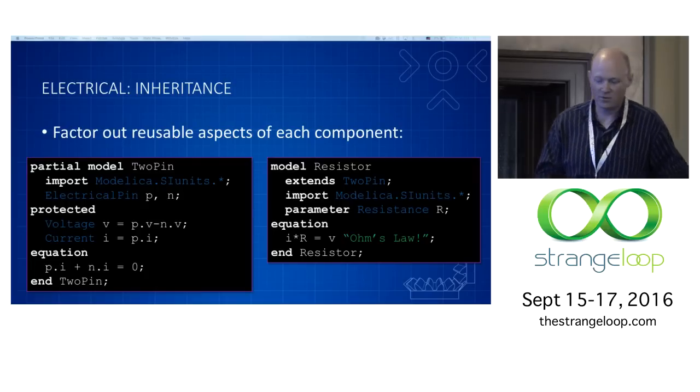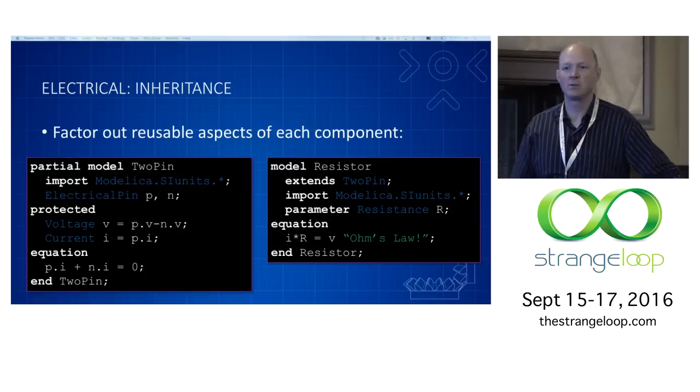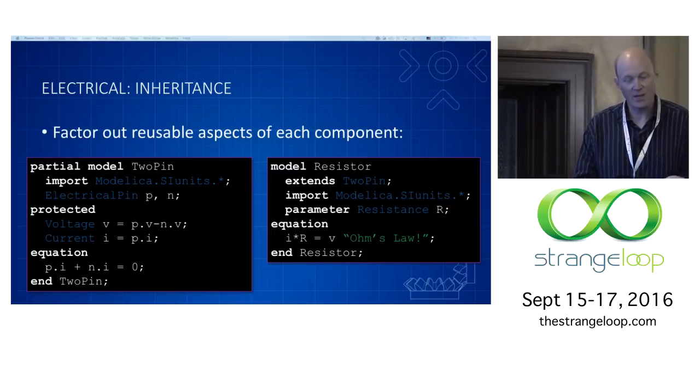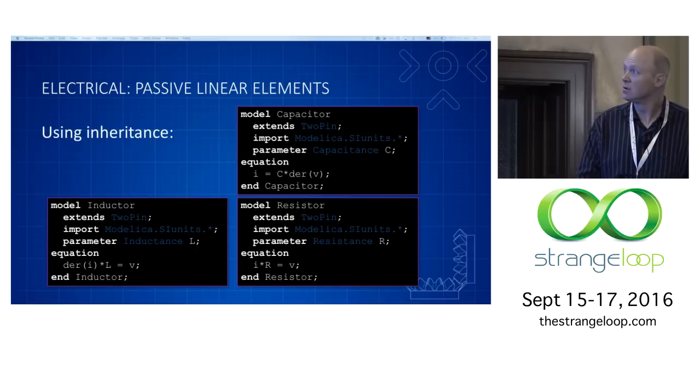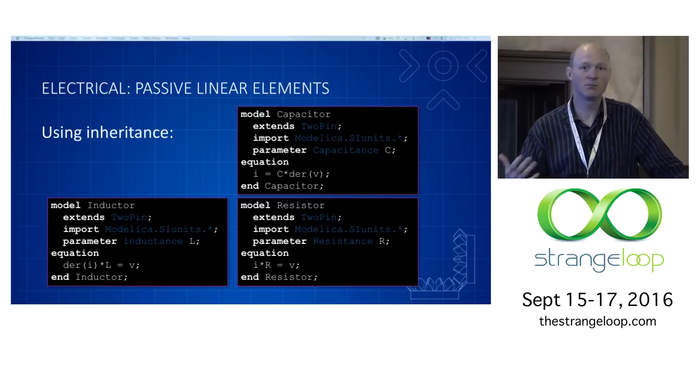What that allows me to do then is to describe the behavior of the resistor like this. The resistor model then simply extends from TwoPin, gets everything in there that is defined, and focuses on what makes a resistor unique versus a capacitor or an inductor. And that is the fact that it has a resistance and that it has Ohm's law. Because we've created these helper variables, the voltage and the current, v and i, we can write Ohm's law in the form that most people are most familiar with it. But we can then reuse that same code to create a capacitor and to create an inductor. Now we've got a few components that we can put together.